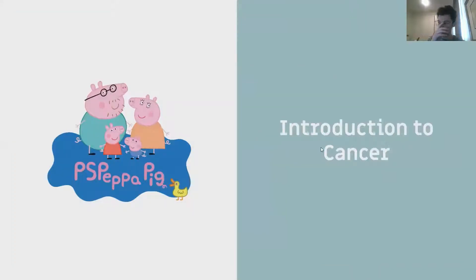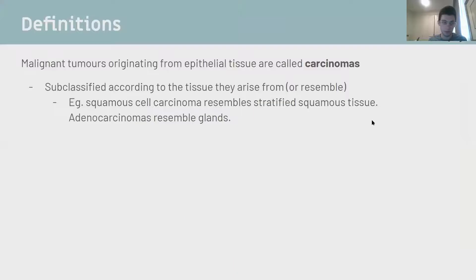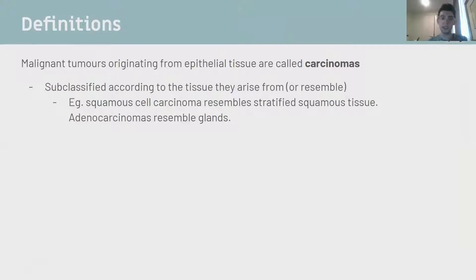So we're going to start off with introduction to cancer. Some definitions that you might hear thrown around and assume that you know but might not. Malignant tumours originating from epithelial tissues are called carcinomas, and it's important to know that cancers are subclassified according to the tissue they arise from. For example, squamous cell carcinomas resemble stratified squamous tissue; adenocarcinomas resemble glands - the 'adeno' refers to glands.